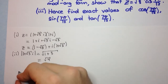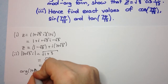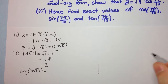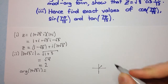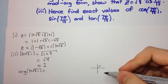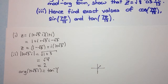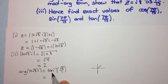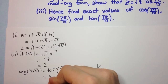We also need the argument. For (1 + √3i), it's in the first quadrant. We work out the argument using tan inverse of the imaginary part over the real part: tan inverse of √3 over 1, which is 60 degrees, or π/3 radians.